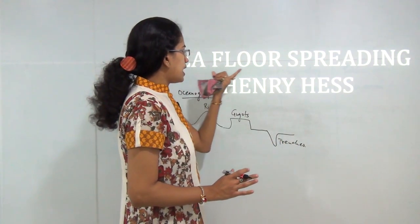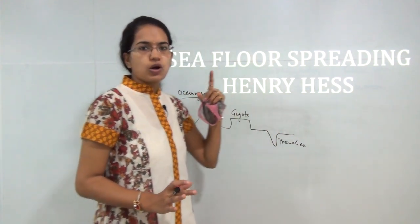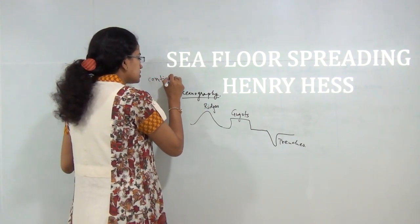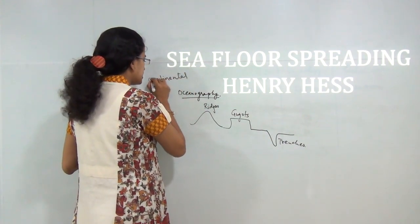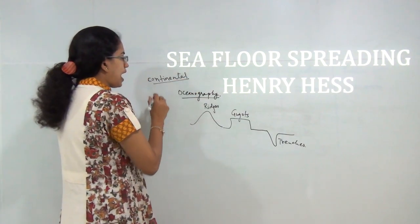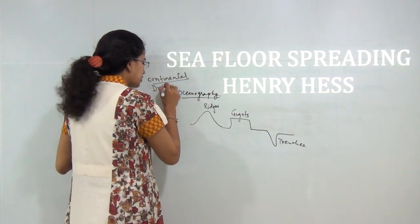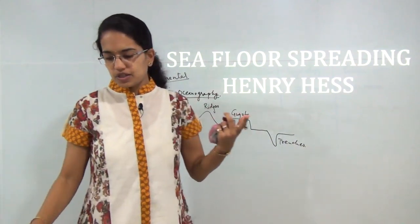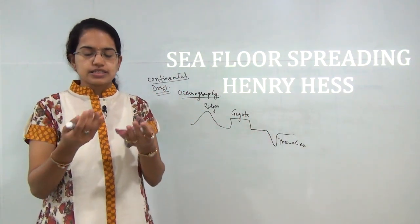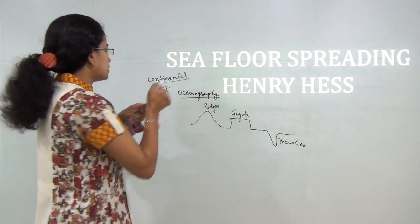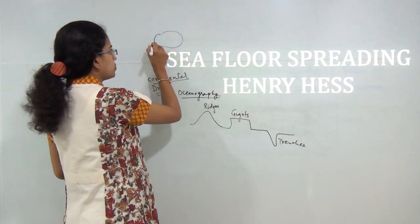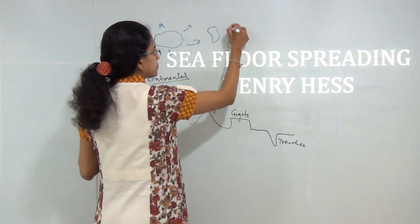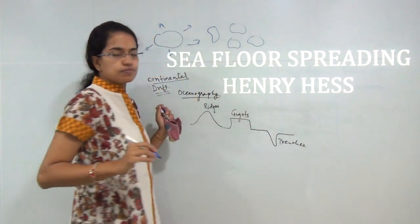Along with that we will try to understand the previously discussed continental drift theory. Now, why was the sea floor spreading concept introduced and what was the reason that continental drift theory was criticized? Wagner gave the continental drift theory where he said the earth was one mass and it slowly drifted away, forming continents individually. That is what Wagner explained.